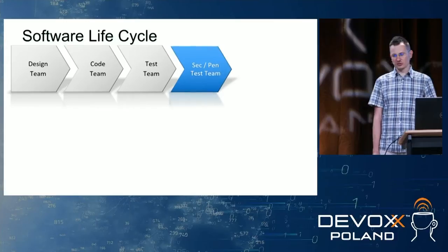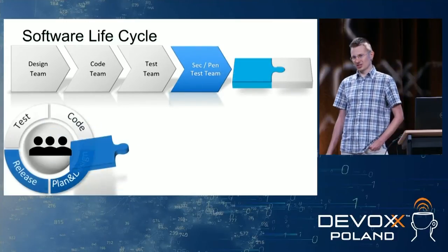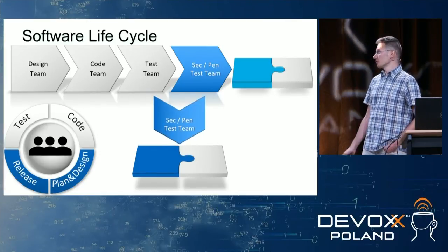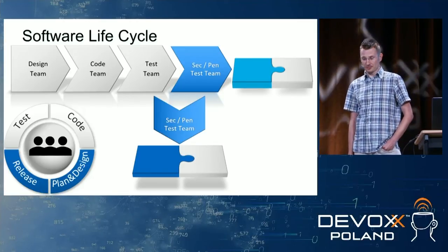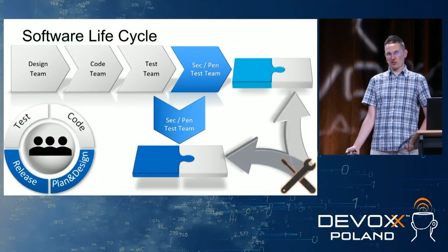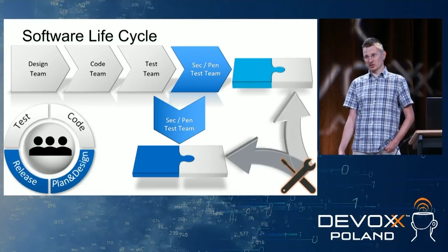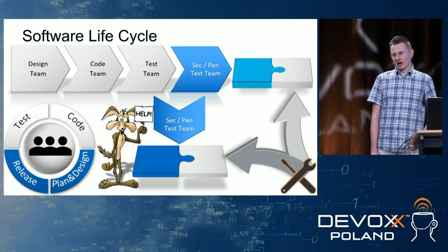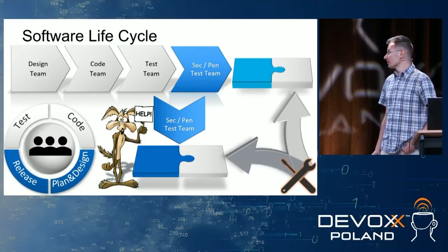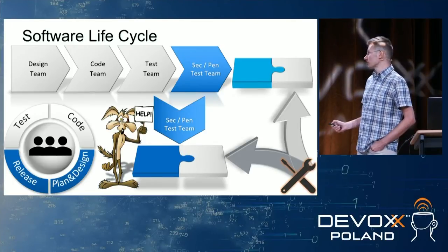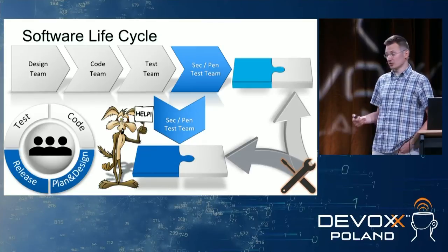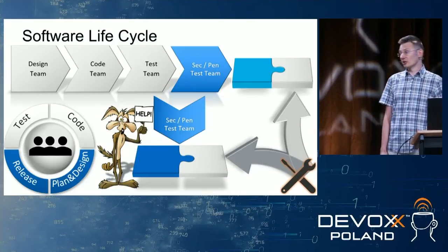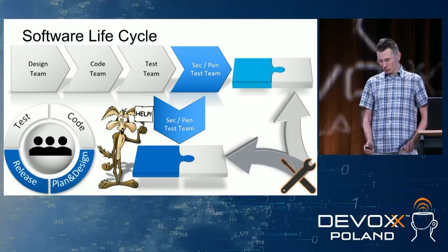It doesn't matter if you use the old waterfall approach or Agile — security testing usually happens at the very end, on the nearly ready-to-go-to-production application. But when the application is actually ready, what about maintenance and new features? So our security is in trouble. Also, a problem found during testing that is related to something that happened during recording or even design can be very costly to fix.